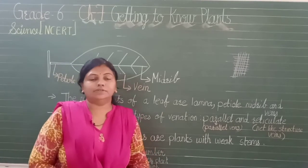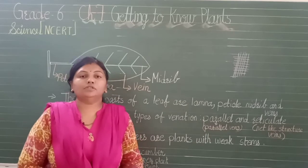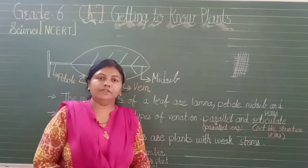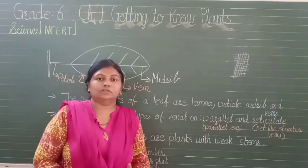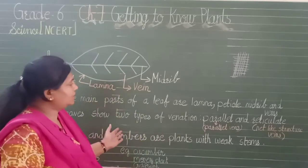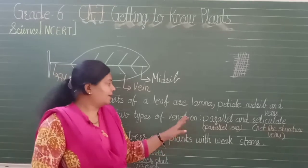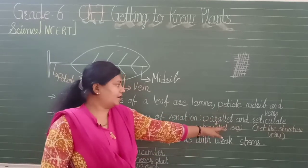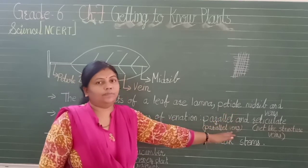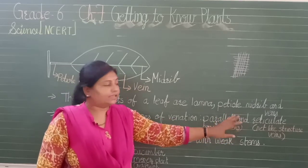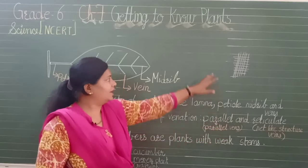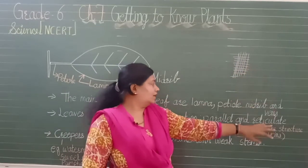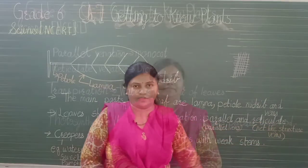You might have seen the money plant — it is mostly found in homes. So parallel venation means having parallel veins in the leaf, while reticulate venation means a net-like structure in the leaf.